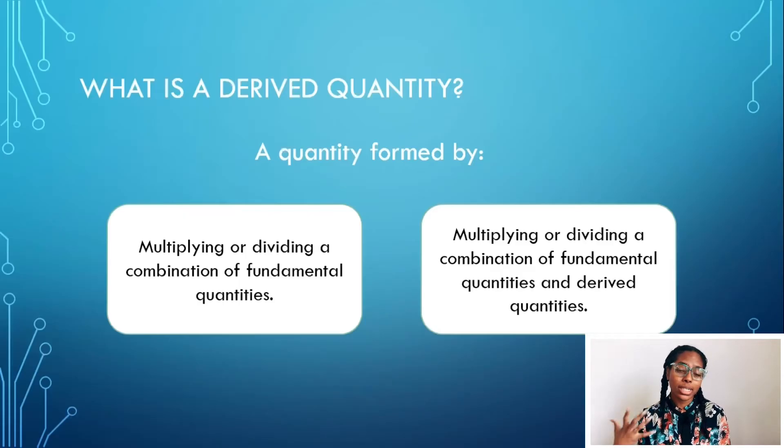So what exactly is a derived quantity? A derived quantity can be formed two ways. One is by multiplying or dividing a combination of fundamental quantities, which we should remember from a few videos ago. Or it could be from multiplying or dividing a combination of fundamental quantities and derived quantities. So basically, you can use fundamental quantities and put them together by division or multiplication, or you can use some fundamental and derived, and that will give you a derived quantity as well.